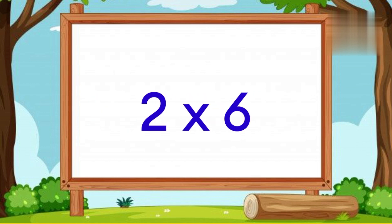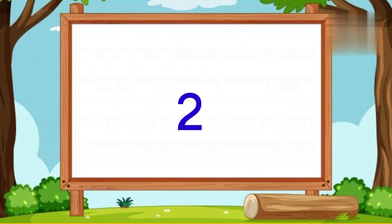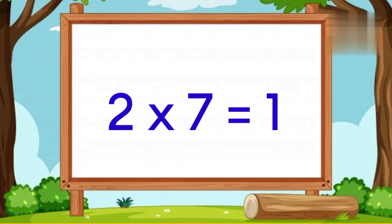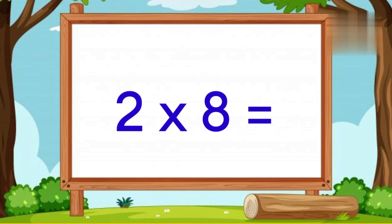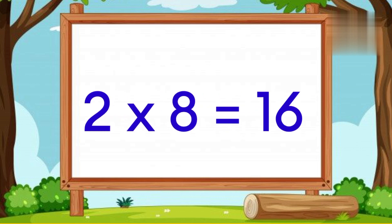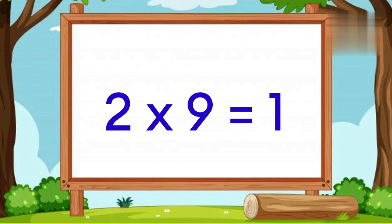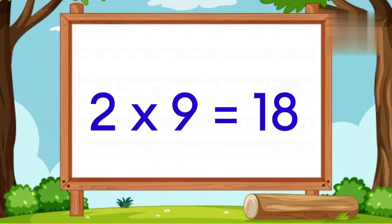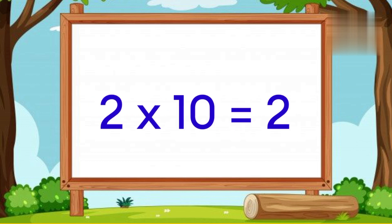Two Six's a twelve. Two Seven's a fourteen. Two Eight's a sixteen. Two Nine's a eighteen. Two Ten's a twenty.